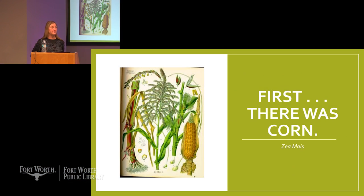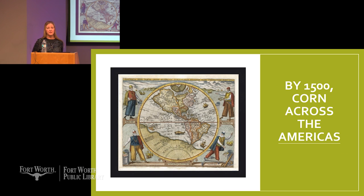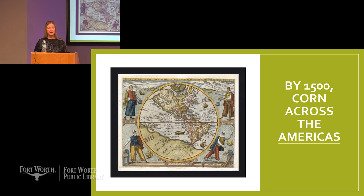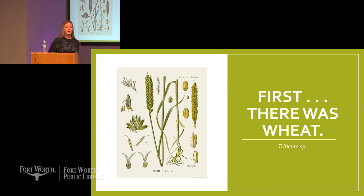We'll talk more about why that is the case. Corn is amazing — it will grow almost anywhere, has a short taproot so it doesn't require much water, easy to harvest, easy to process, easy to store. By the time Europeans arrived, corn had spread through virtually all the Americas, north and south — a cornerstone, perhaps the cornerstone, of the Native American diet.